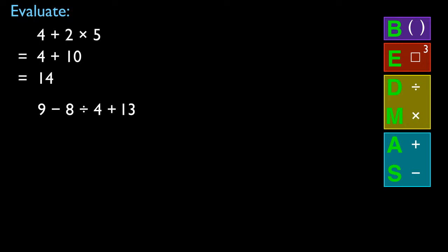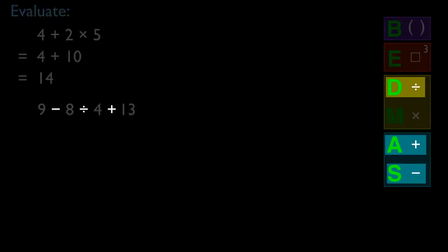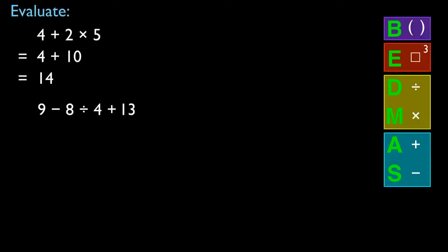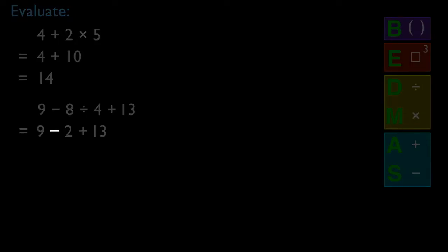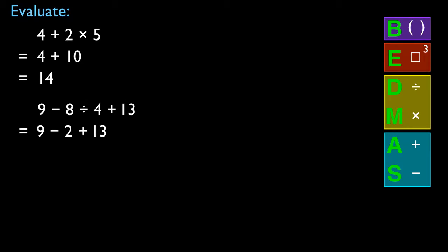Let's try another: 9 subtract 8 divided by 4 plus 13. Now we're up to three operations. Looking at subtraction, division, and addition, we recognize that division comes ahead of either addition or subtraction. So we perform division first: 8 divided by 4 is 2. Now we have 9 subtract 2 plus 13. It's important to perform the subtraction on the left before the addition on the right: 9 subtract 2 is 7, then add 13, giving an answer of 20.